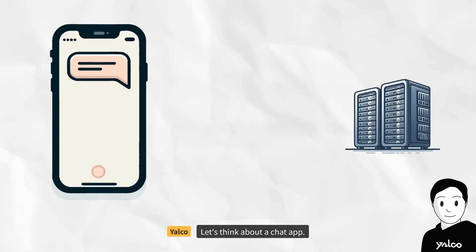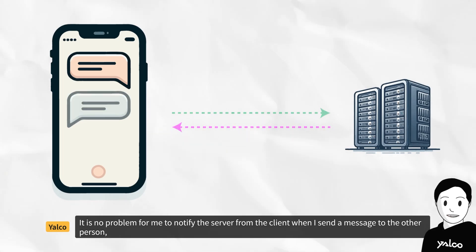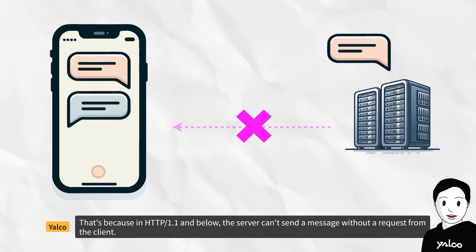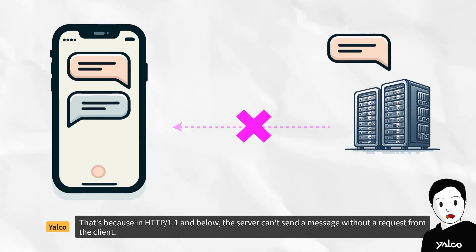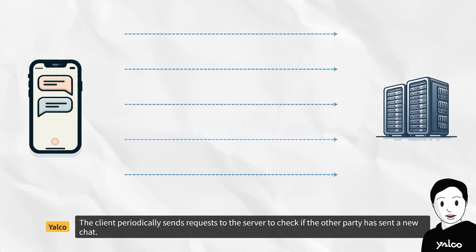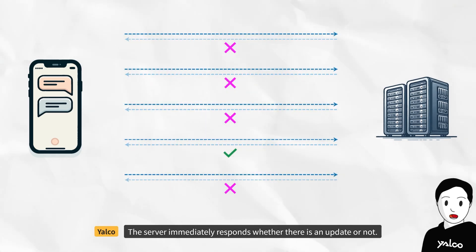Let's think about a chat app. It is no problem for me to notify the server from the client when I send a message to the other person. But it's impossible for my app to detect when the other person sends a message. That's because in HTTP 1.1 and below, the server can't send a message without a request from the client. If you want to solve this problem using HTTP, there's a method called polling — the client periodically sends requests to the server to check if the other party has sent a new chat, and the server immediately responds whether there is an update or not.